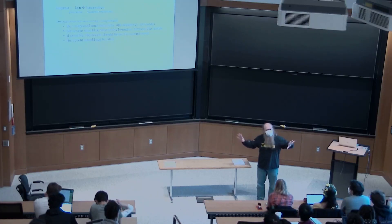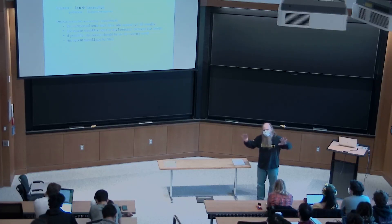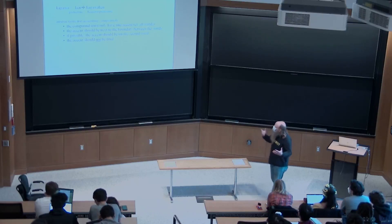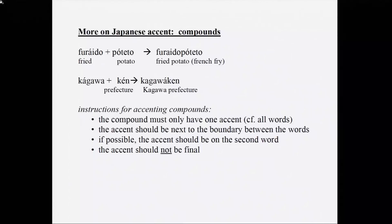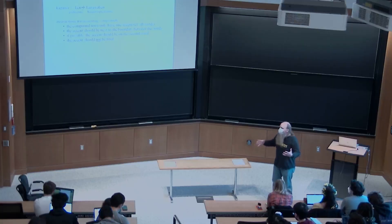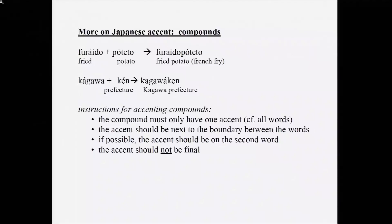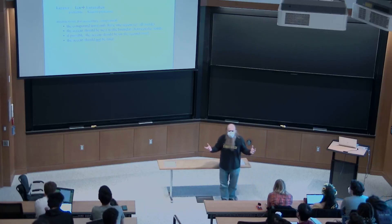So 'Kagawa-ken' — 'Kagawa' is a place name accented on its first syllable, but the expression for Kagawa Prefecture has accent right before the boundary, not on the second half, because the second half 'ken' is only one syllable long. I'm telling you this not just to educate you about Japanese, but to show that there are cases of complicated phenomena fruitfully thought of as a series of conflicting things you're trying to do.